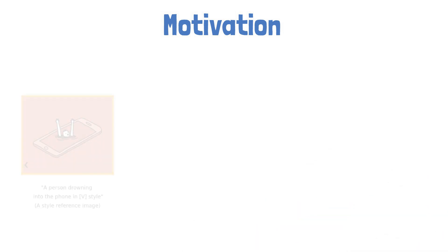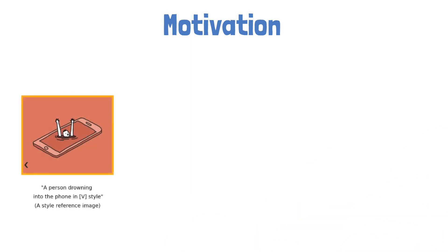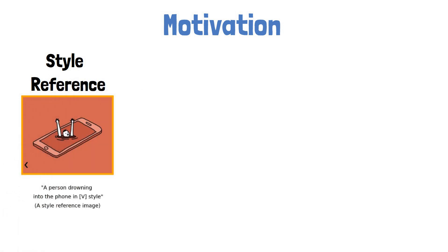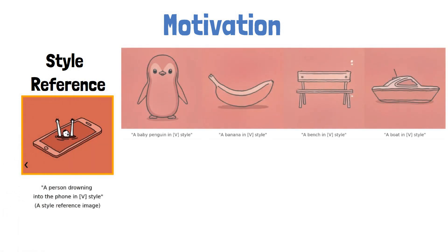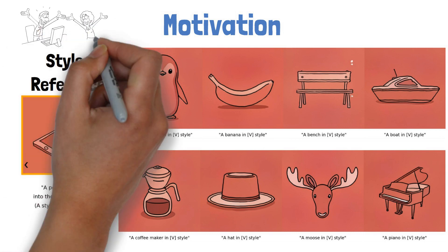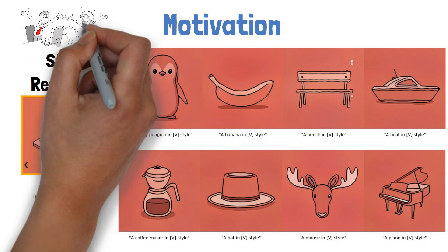So with StyleDrop we are able to use an image as a style reference, like this image of a person drowning in a smartphone, and then generate images with consistent style based on the style reference, such as these examples here of different subjects with similar style. Extracting the style from only one or few images is really mind-blowing.